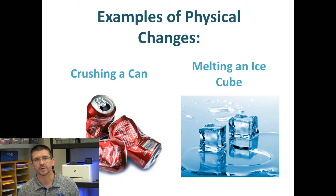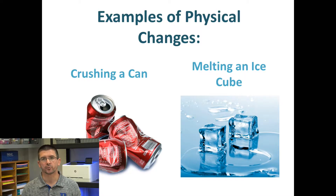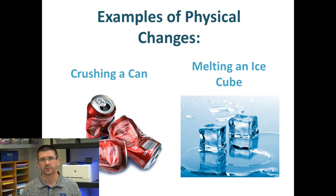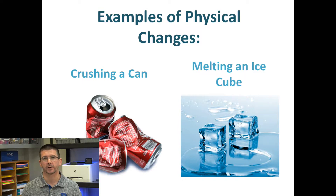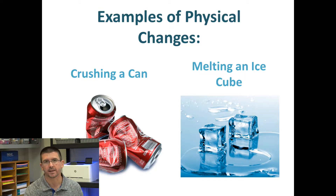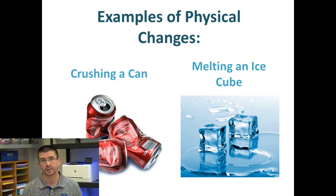Some other examples of physical changes would include crushing a can — we change its appearance, we change its shape, but it's still that aluminum can that we started with. Melting an ice cube is another example of a change of state.